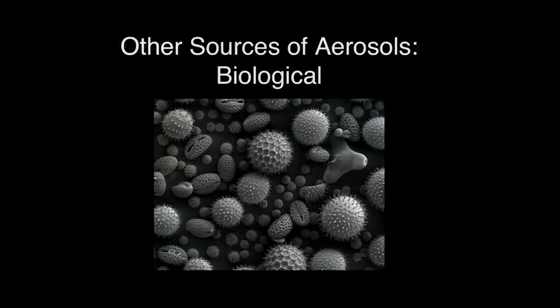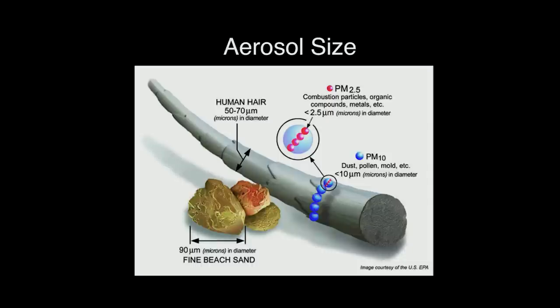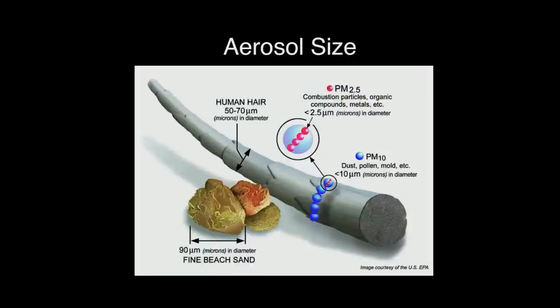Other sources of aerosol particles include biologicals — spores, viruses, bacteria — all floating in the air. When we think about aerosol size: a human hair is between 50 and 70 micrometers in diameter, coarse hair about 100 micrometers, fine hair maybe 10–20 micrometers. Beach sand is about 90 micrometers. Dust, pollen, and mold tend to be less than 10 micrometers. Combustion particles are even smaller — on the order of 2.5 micrometers or below.